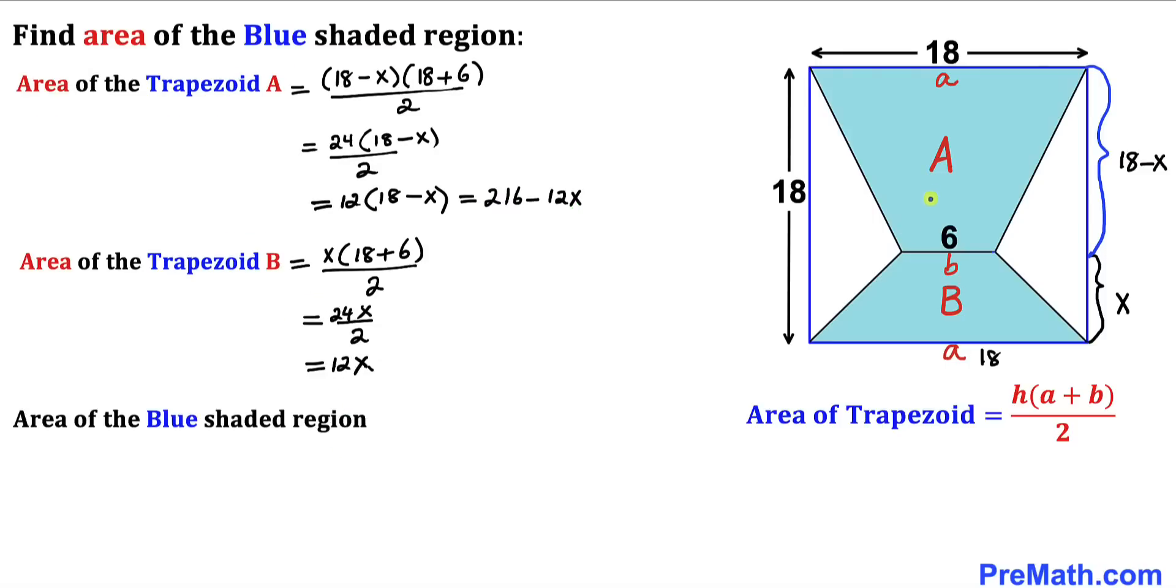So therefore the area of this whole blue shaded region is going to be this one. First I'm going to write down 216 minus 12X and then plus 12X as well. And now we can see negative 12X and positive 12X they are gone.